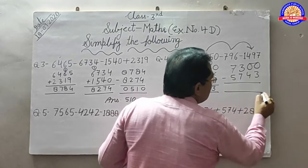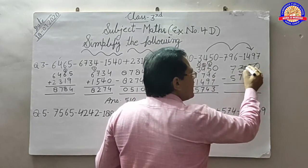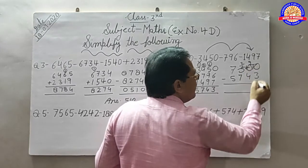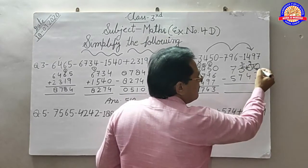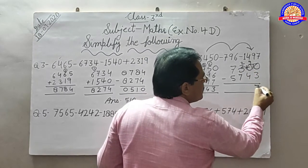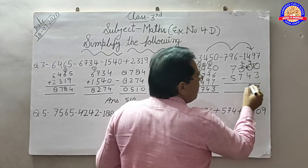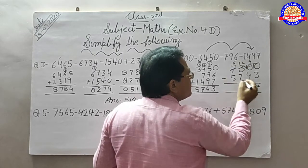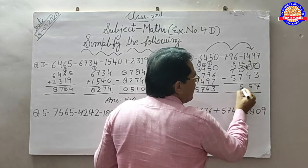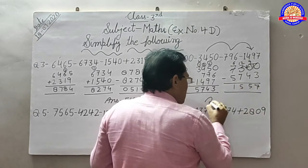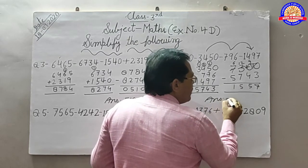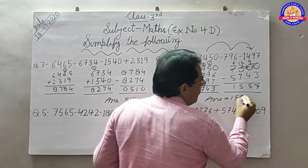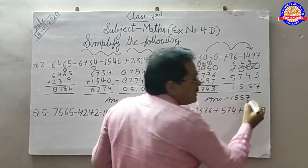और इसको minus करते हैं. यहाँ पर कोई नंबर नहीं है, यहाँ से carry लेंगे: 2, 10, 9, 10. 7, 5 — यह minus नहीं होगा, यहाँ से carry लिया: 6, 5, 1. Answer equal: 1, 5, 5, 7.